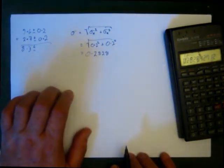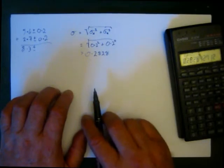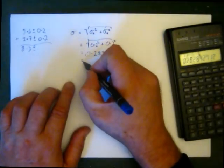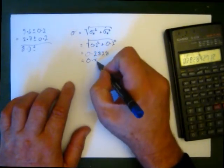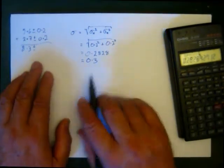The thing about uncertainties is we only give uncertainties to one significant figure. So I'm going to round that off to one significant figure—round it to 0.3, and that's going to be my uncertainty.